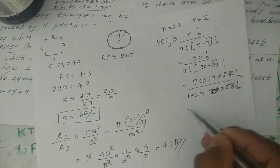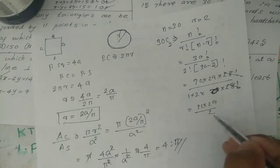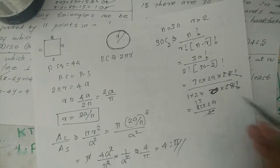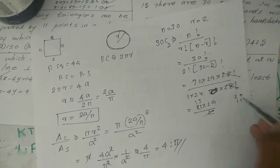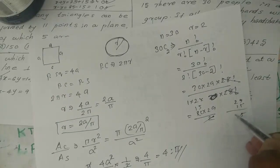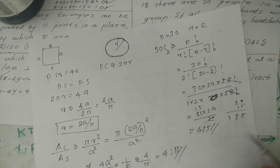Simplifying: 30 times 29 divided by 2 equals 435. So the total number of handshakes is 435.